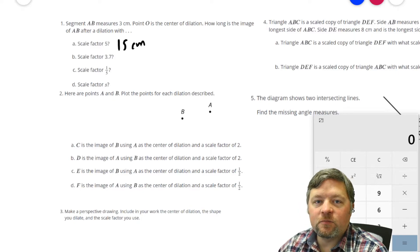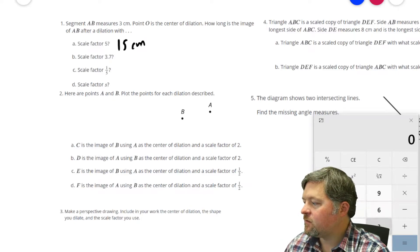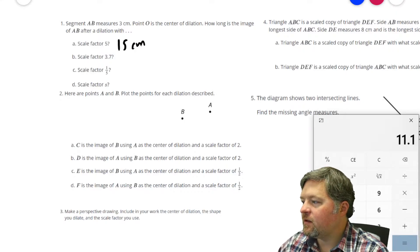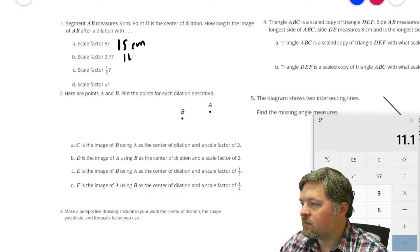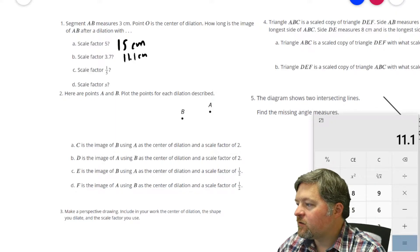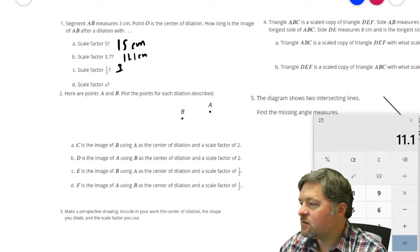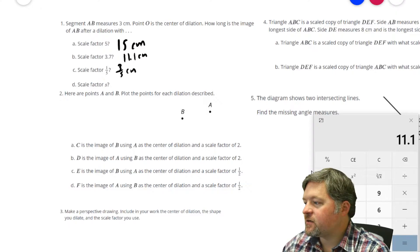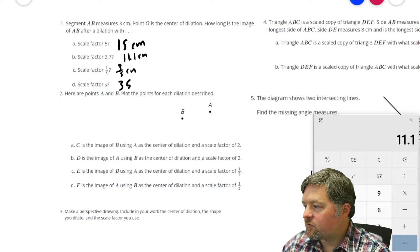Scale factor of 3.7. It was 3. We multiply it by 3.7. 11.1 centimeters. Scale factor of 1 fifth. 3 times 1 fifth is 3 fifths of a centimeter. Scale factor of S. Again, we just multiply 3 times S.